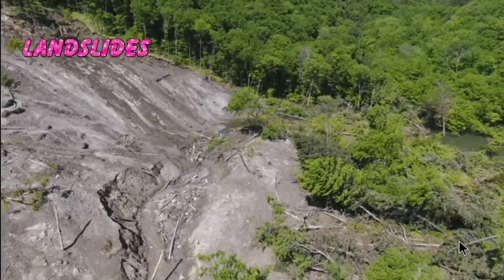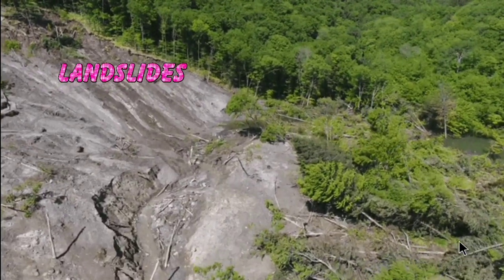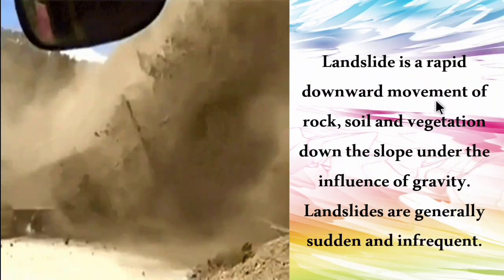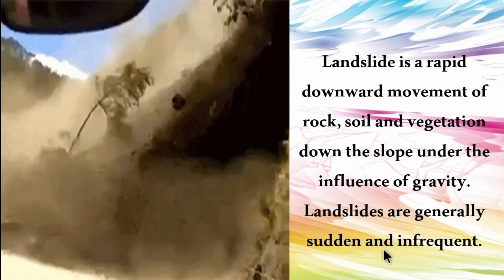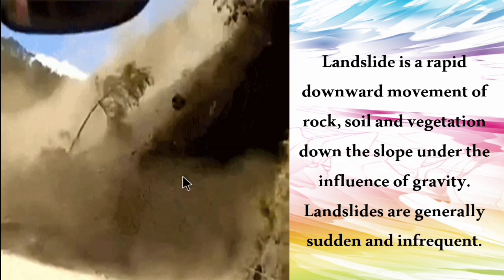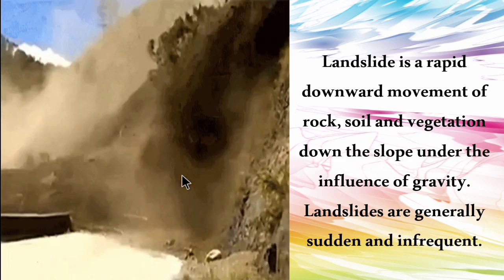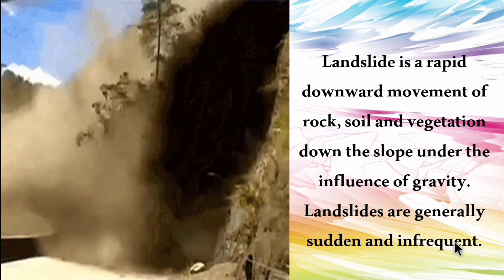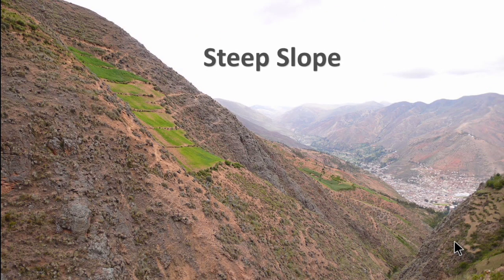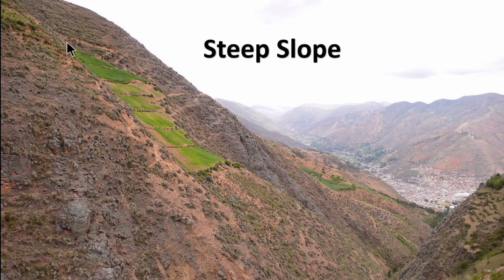The fifth major hazard in India is landslide. Landslide is a rapid downward movement of rock, soil and vegetation down the slope under the influence of gravity. Landslides are generally sudden and infrequent. As seen in the picture, rocks, soil and trees fall downward due to gravity. The major cause is the presence of steep slopes.